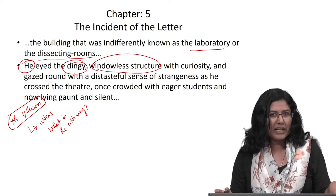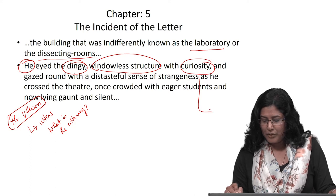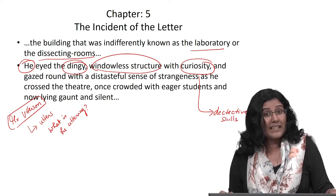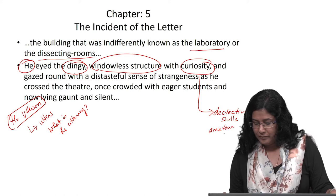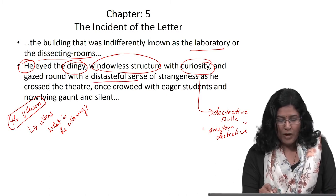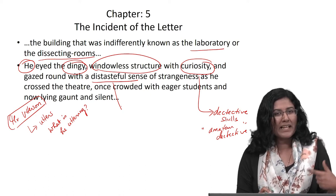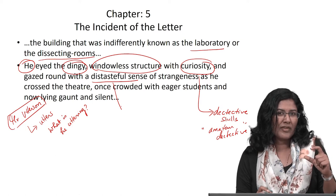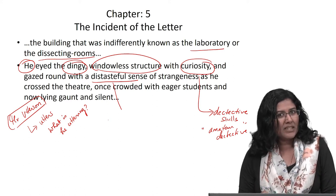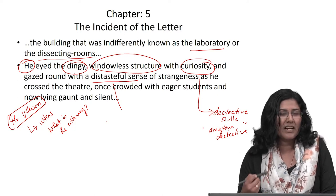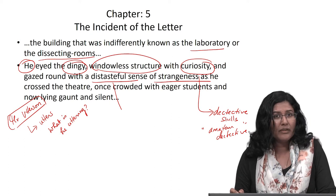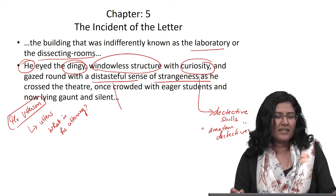Utterson is playing an amateur detective in this novella. There is a sense of distaste in him. If you remember the early part of the story, the presence of Mr. Hyde brings a lot of distaste to onlookers. So like Mr. Hyde, this structure also evokes a sense of distaste in the person experiencing the space. There is a sense of strangeness too as he crosses this surgical theatre.